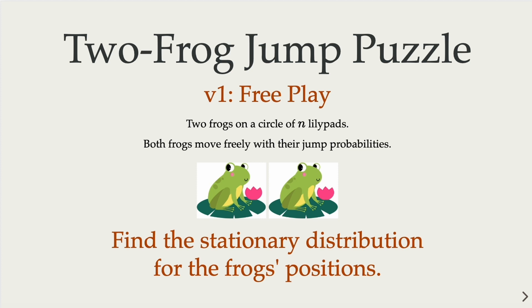For a simpler version of the problem where there is only one frog jumping on a circle of n lily pads, we have a video to justify that eventually the stationary distribution has the uniform probability that each particular position is 1 over n. Do check out the previous video for the detailed explanation why we can use symmetry arguments to reach the conclusion.